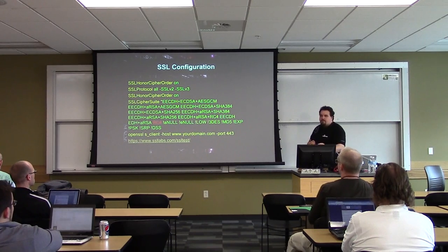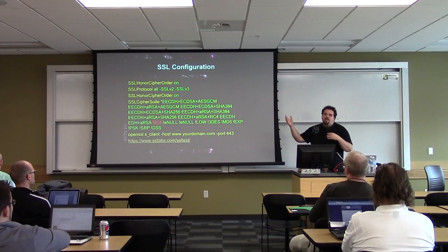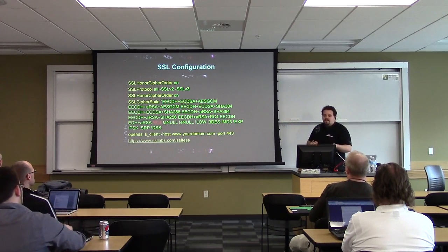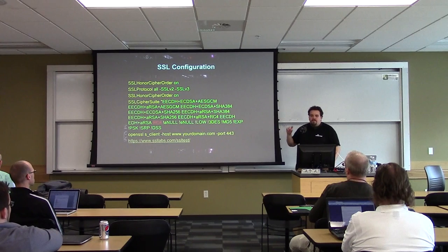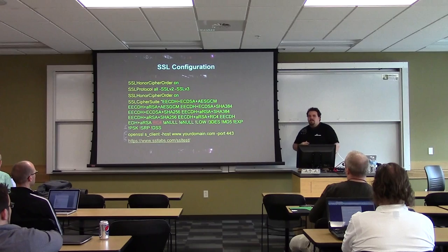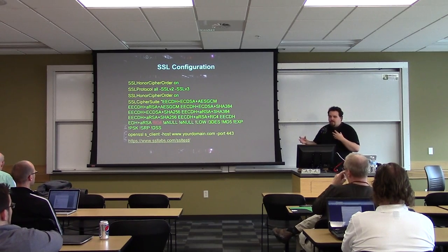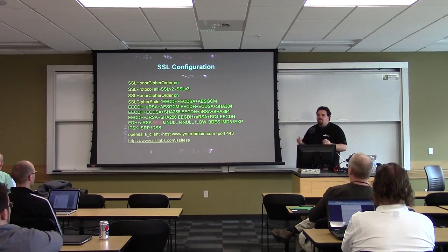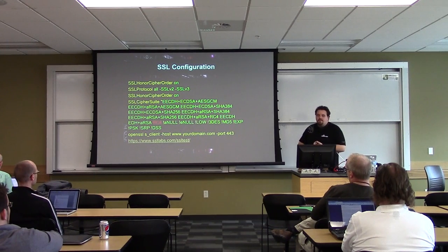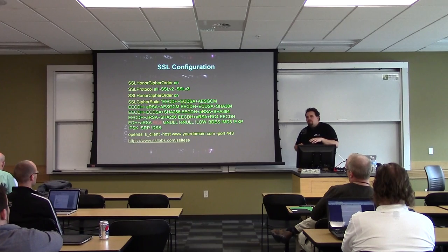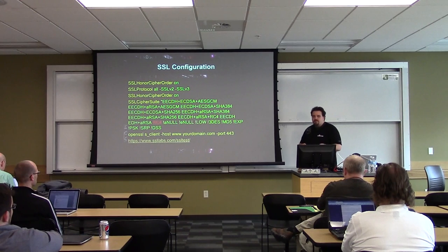We're honoring the cipher order. When SSL starts up, the server asks what ciphers the client supports and picks the most secure one first, going down the list until it finds the best available cipher. We enable all protocols but turn off SSL version 2 and SSL version 3. For the SSL protocol setting, you can also just specify TLS 1.2 to only support the most secure version.